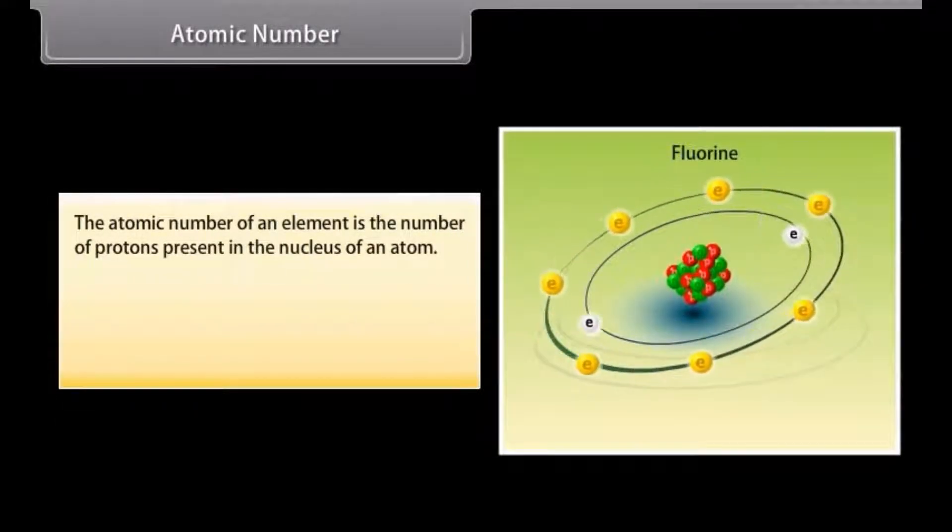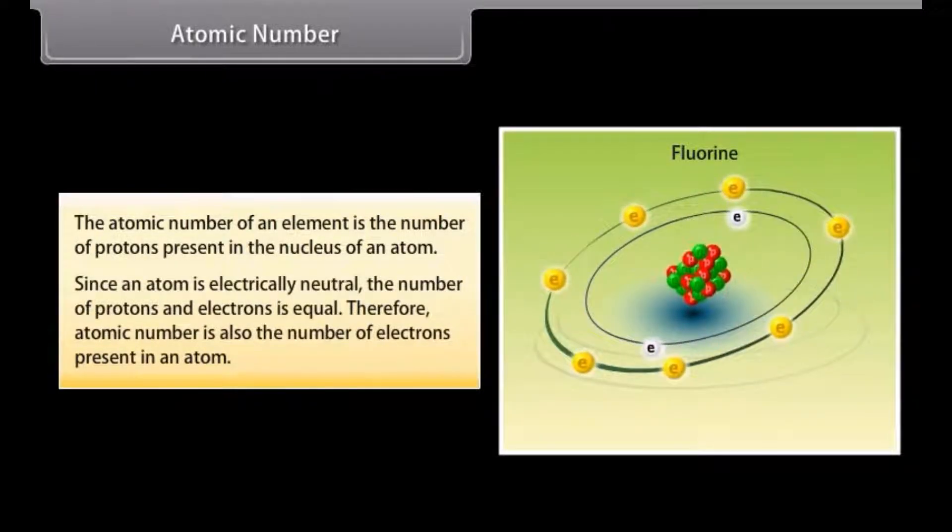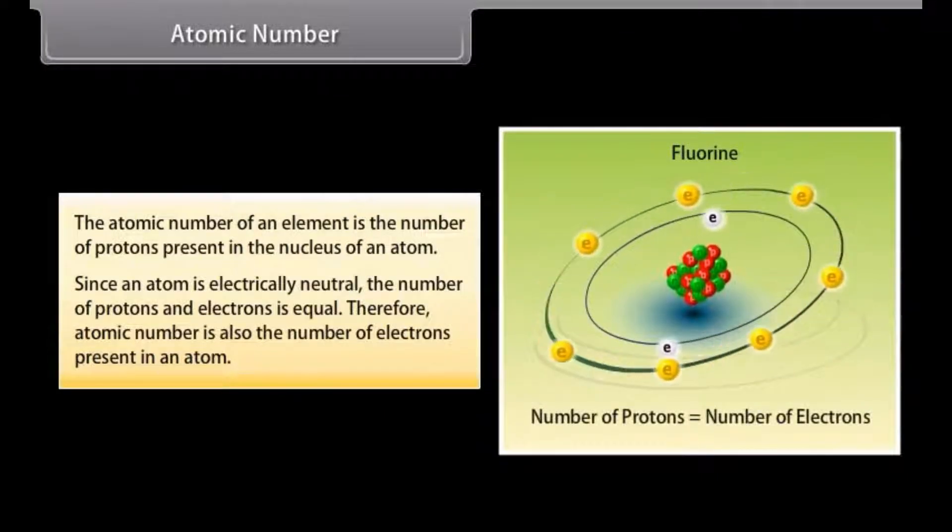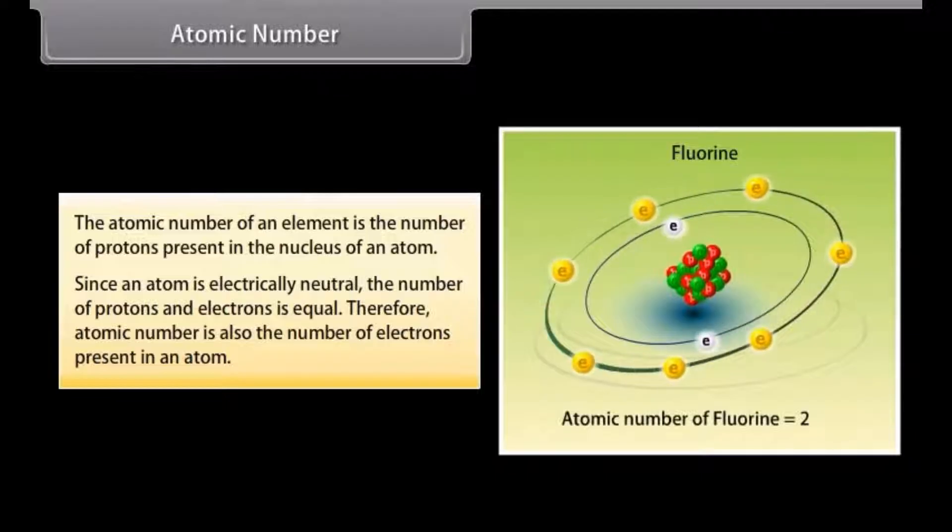Atomic number. The atomic number of an element is the number of protons present in the nucleus of an atom. Since an atom is electrically neutral, the number of protons and electrons is equal. Therefore, atomic number is also the number of electrons present in an atom.